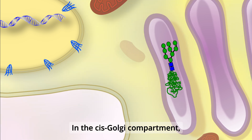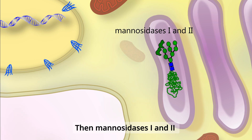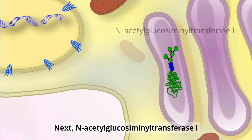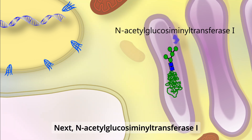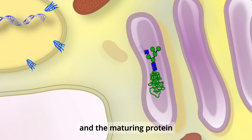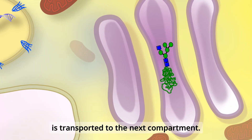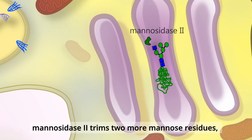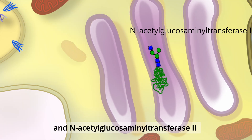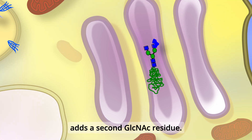In the cis-Golgi compartment, any remaining glucose residues are removed, and mannosidases 1 and 2 remove four of the mannose residues. Next, N-acetylglucosaminyltransferase 1 attaches a GlcNAc residue, and the maturing protein is transported to the medial Golgi compartment, where mannosidase 2 trims two more mannose residues and N-acetylglucosaminyltransferase 2 adds a second GlcNAc residue.